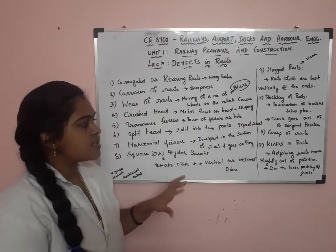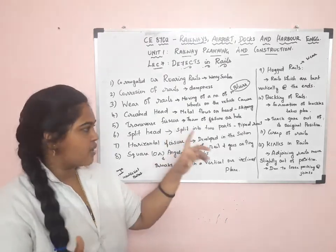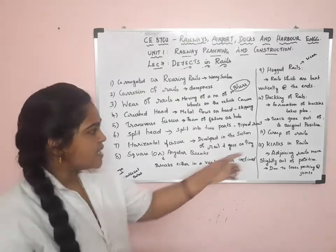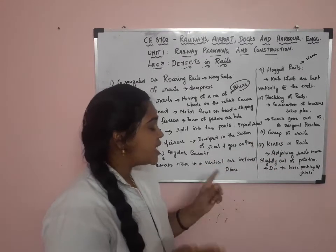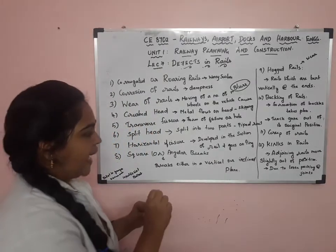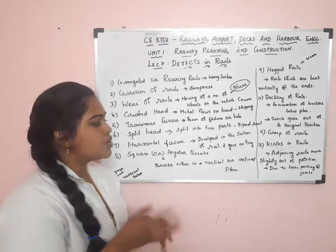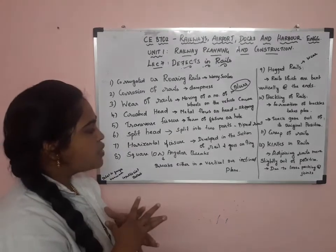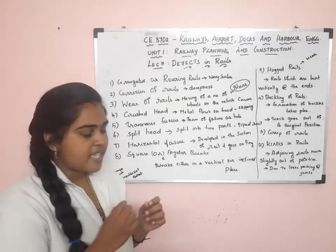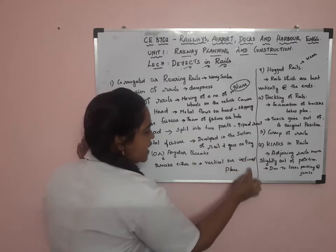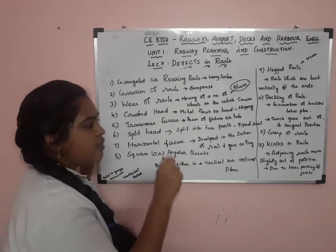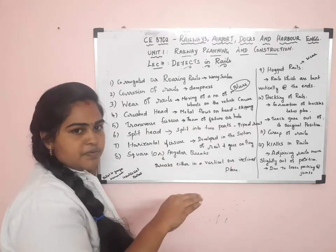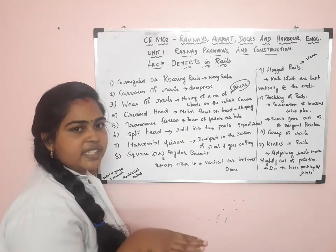Next is Creep of Rails. Creep of rails means longitudinal movement of rails in a railway track. Next is Kinks in Rails — the adjoining rails move out of their position, which is known as kinks in rails. Kinks in rails are caused due to loose packing of adjoining rails and uneven wear. Due to this, an unpleasant jerk is felt when vehicles move on these kinks, which is very unpleasant to passengers travelling on the track.